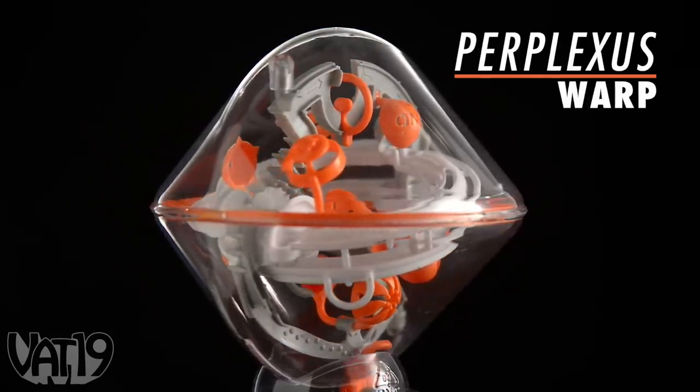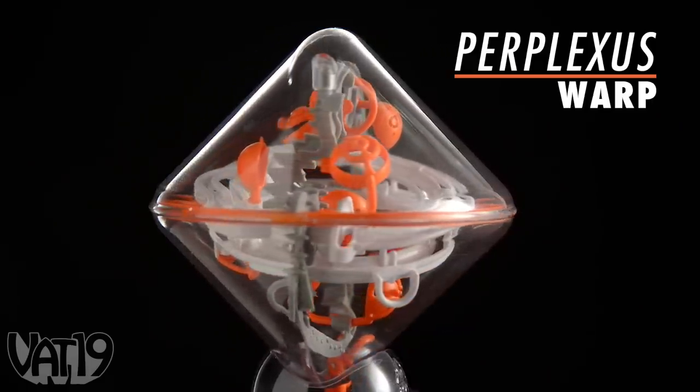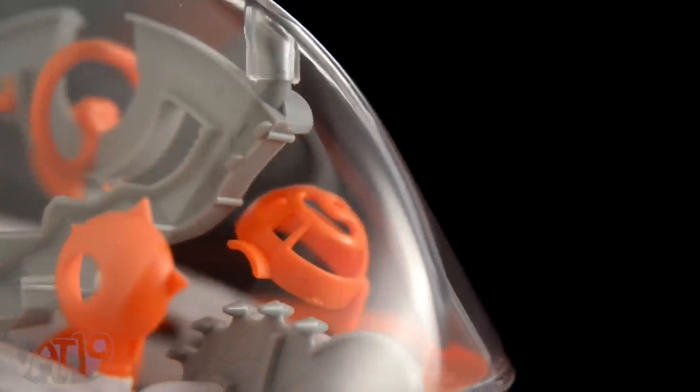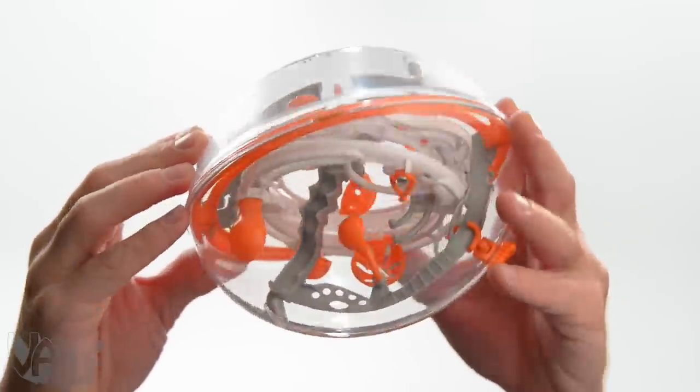This is the Perplexus Warp, a whole new kind of brain-teasing concentration puzzle. The marble maze's track is wound inside a transparent shell. You manipulate the maze to move the marble along the track.